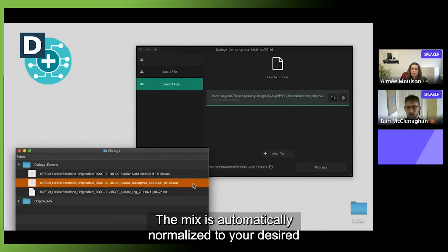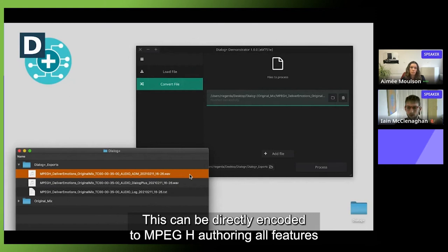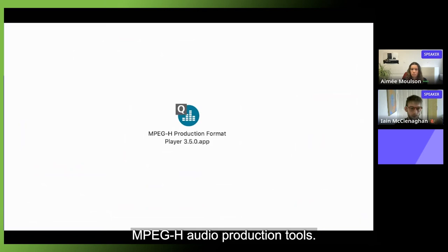Finally two Dialogue Plus audio files are exported. One is the legacy stereo mix with enhanced dialogue and attenuated background. The mix is automatically normalized to your desired target loudness. The other output is an ADM broadcast wave file comprising a complete MPEG-H scene authoring. This can be directly encoded to MPEG-H offering all features of object-based audio as user interactivity or universal delivery. Furthermore you can directly play it back and edit it with the free MPEG-H Audio Production Tools.